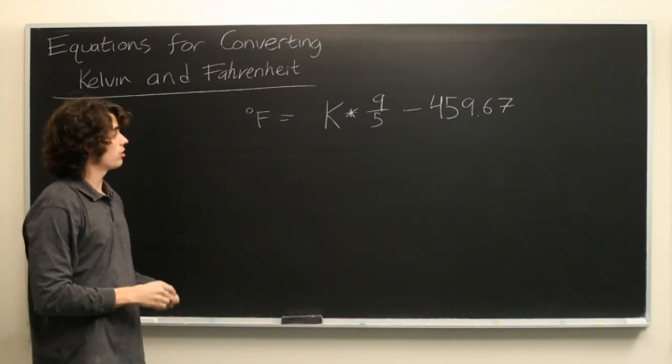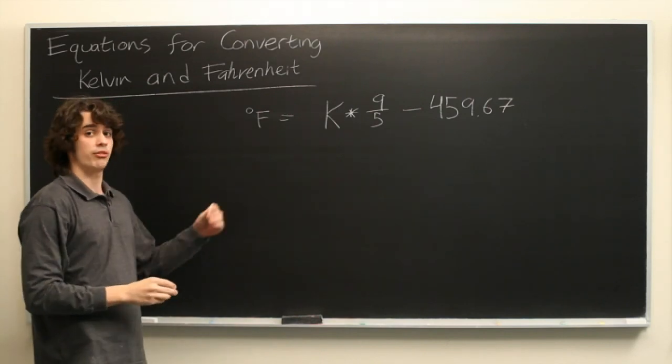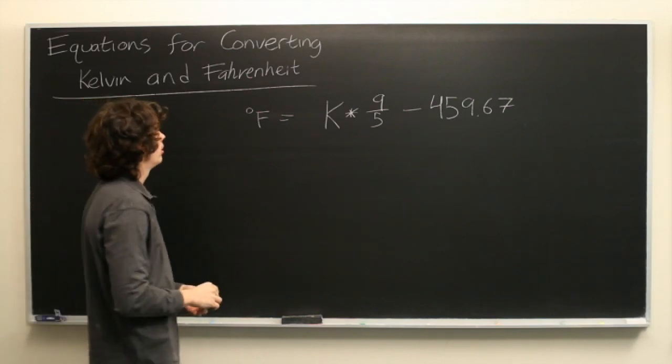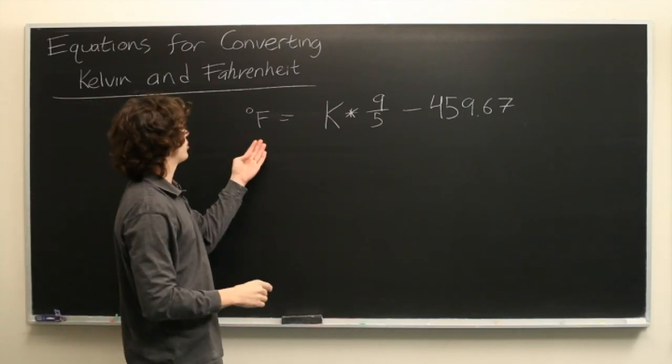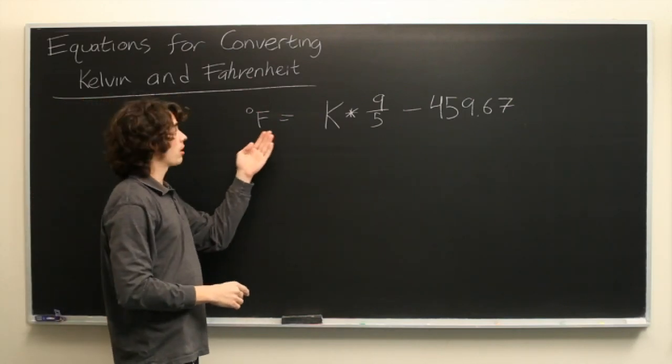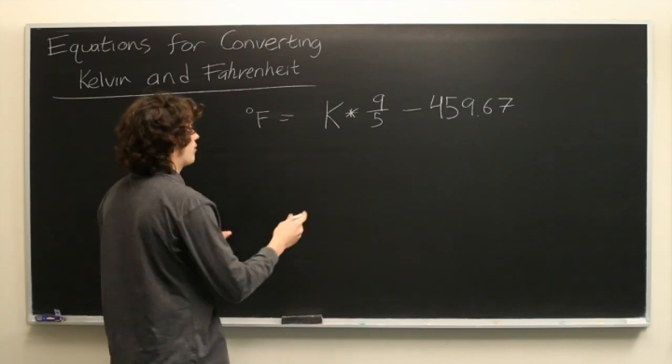Converting the other way around is just as simple and in fact we can derive it from what we already have. So let's assume that we know what something is in Fahrenheit and we want to convert it to Kelvin. To get that from here,